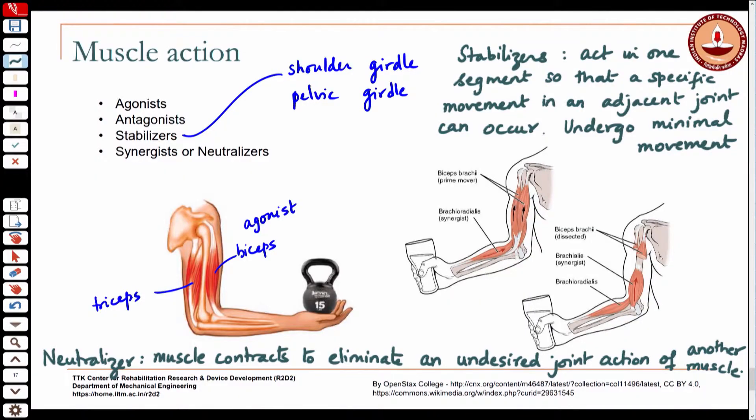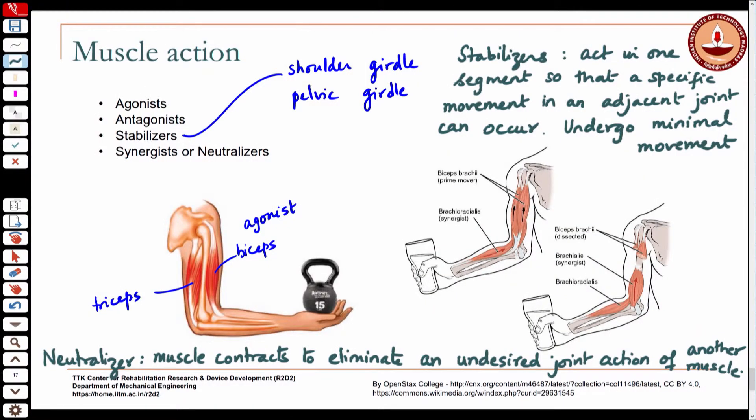Similarly, in the arms, sometimes when you flex your arm it may be accompanied by a supination action. The pronator may also act along with it to prevent that, if you do not want that particular action. We do not think about these things consciously, but that is what is happening — the muscles are working synergistically to ensure that the desired movement is what is performed.